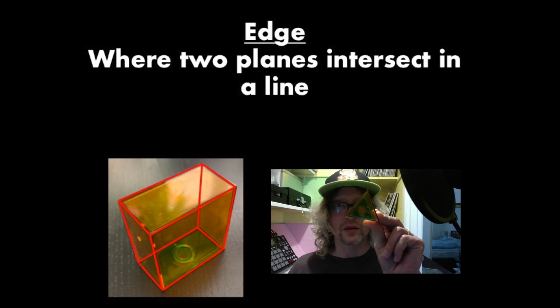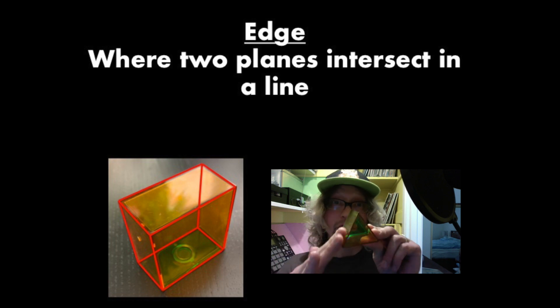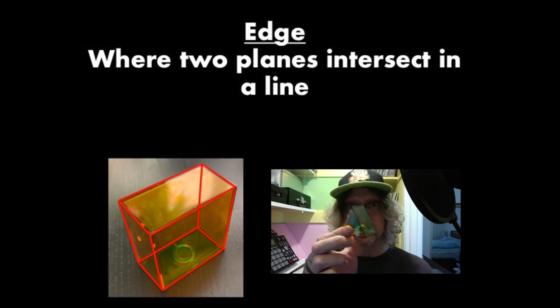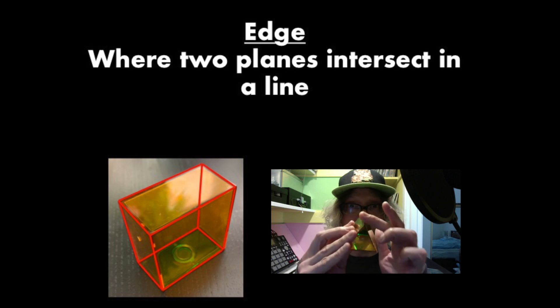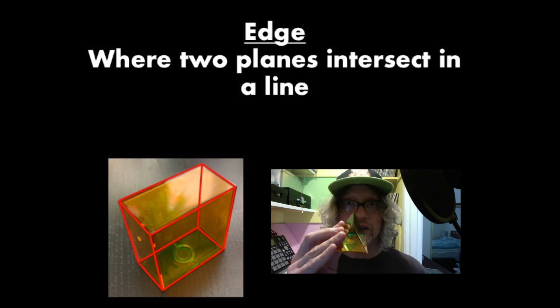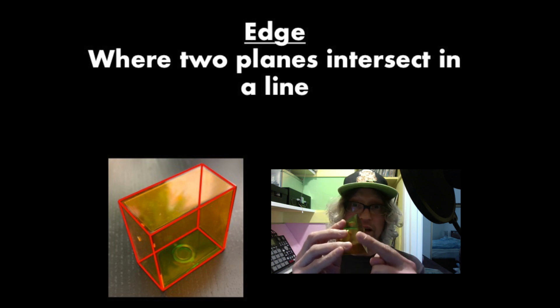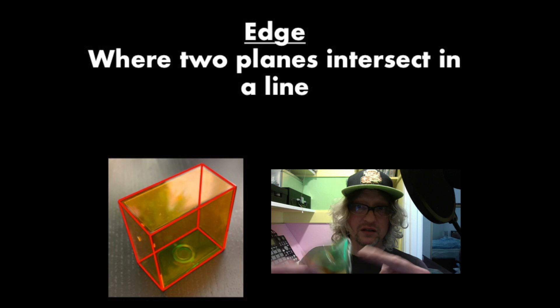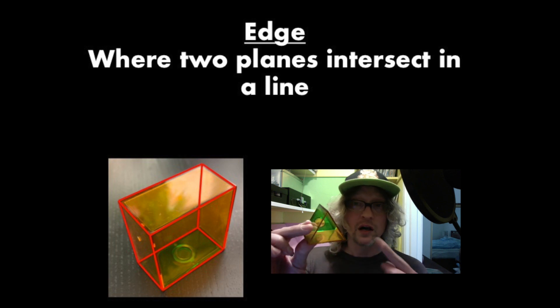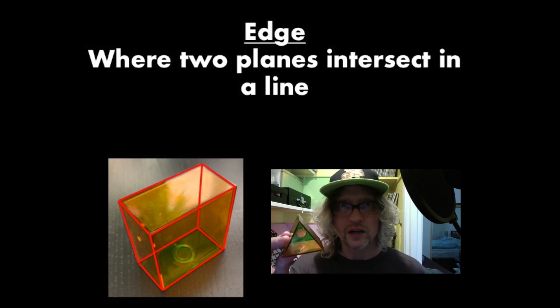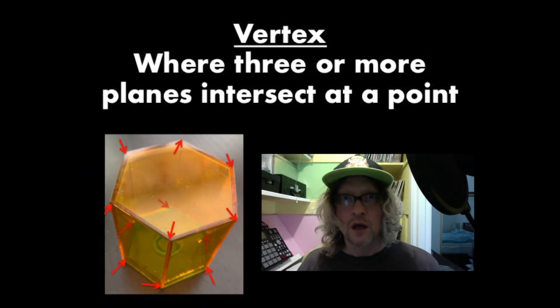If you want to take a look at another example, let's take a look at this triangular prism right here. If you imagine this flat surface is being part of a plane and this flat surface here is being part of a plane, where those two planes would meet in a line, we are calling that an edge. So here is our edge. You can see there's a number of edges in this triangular prism. We're going to have to count those later, but for now, just know that this is an edge.